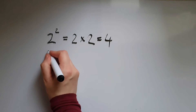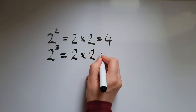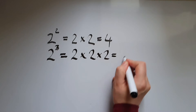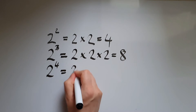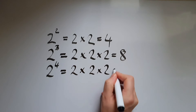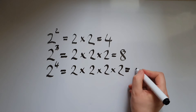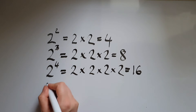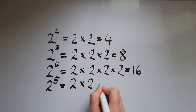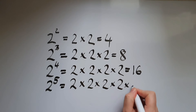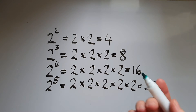Two to the power of three, or two cubed, is the same as saying two times two times two, which gives us eight. Two to the power of four is the same as saying two times two times two times two — four twos multiplied — and that gives us sixteen. Two to the power of five is two times two times two times two times two, which gives us thirty-two.